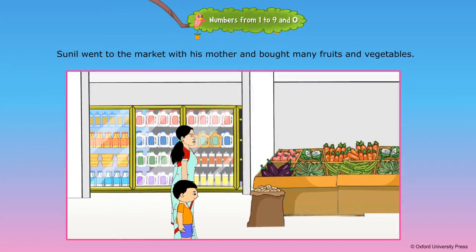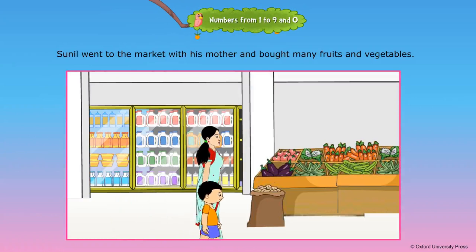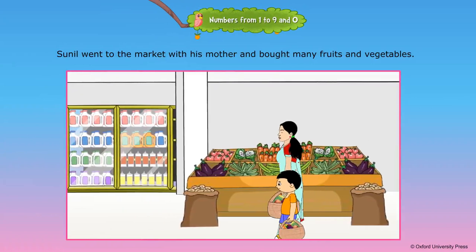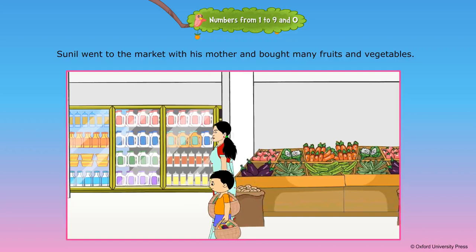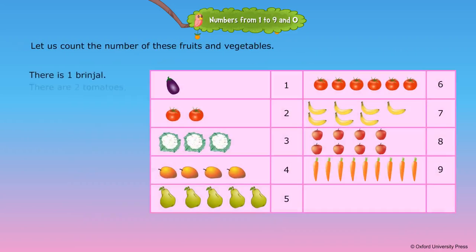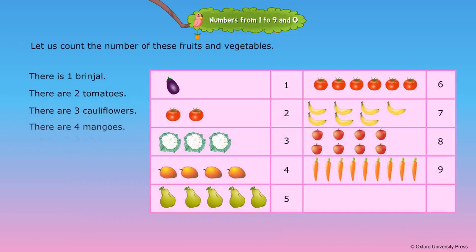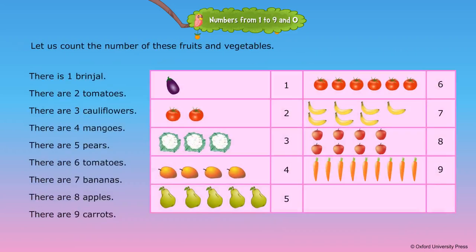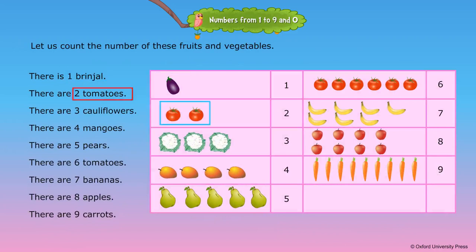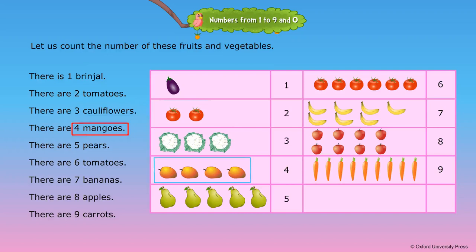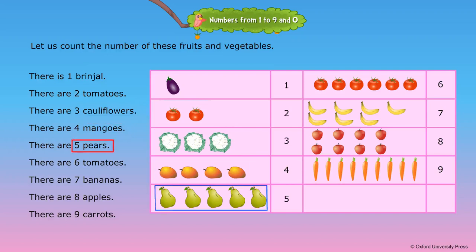Sunil went to the market with his mother and bought many fruits and vegetables. Let us count the number of these fruits and vegetables. There is one brinjal. There are two tomatoes. There are three cauliflowers. There are four mangoes. There are five pears.